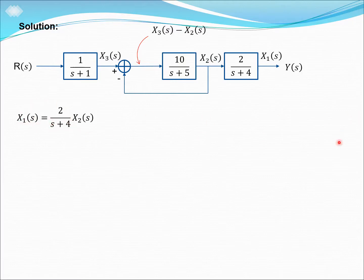And we are going to do the cross multiplication. So we get the cross multiplication, s plus 4 goes to the left, and we solve this, we are going to solve x1. So we get sx1s plus 4x1s equals to 2x2s.